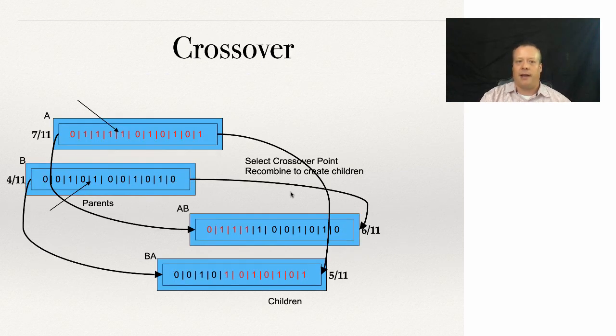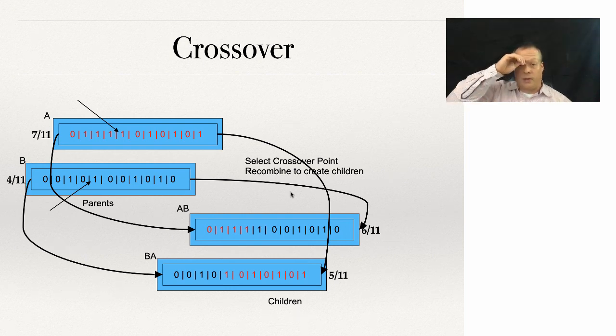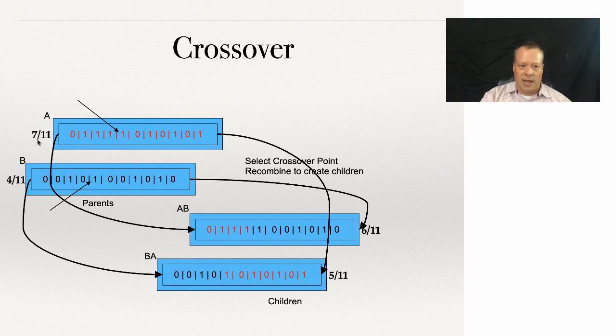Crossover is a little more difficult. What we're going to do is first choose two individuals—in this case we chose A and B—and then we choose a crossover point between those two individuals. In this case, we choose that between the fourth and the fifth.